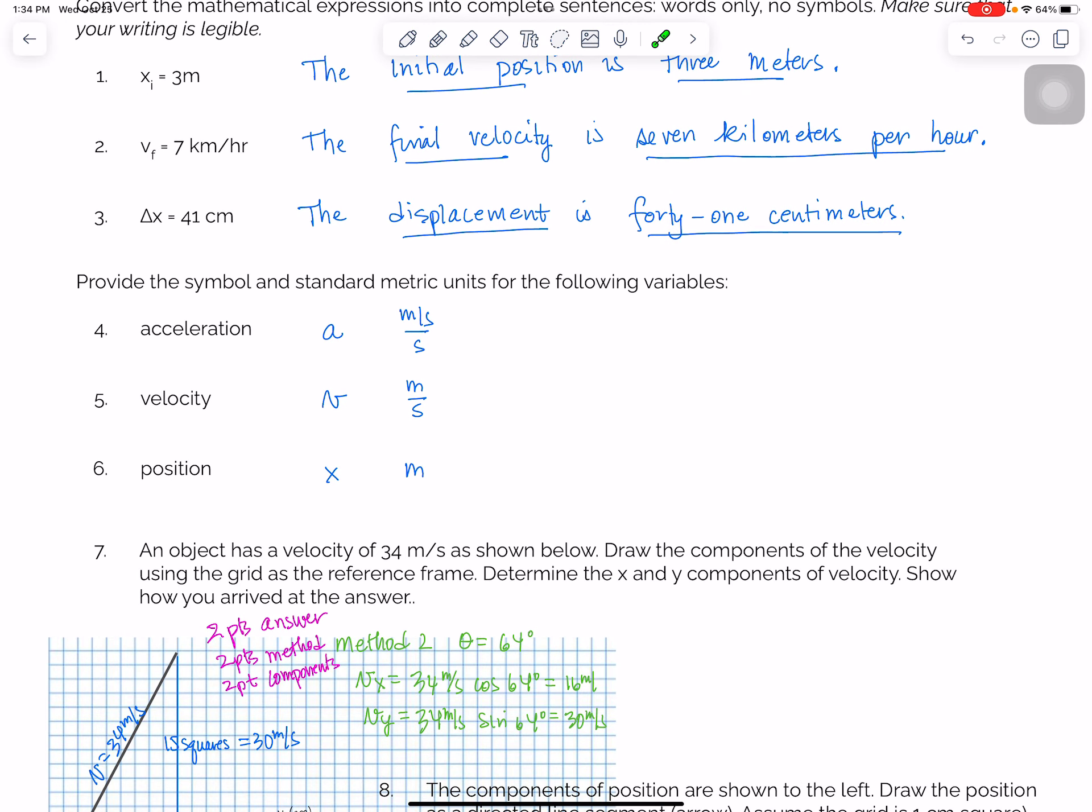Next, you had to do symbols and standard units. So acceleration, the symbol is A. The units are meters per second. I also accepted meters per second squared. Velocity is V, symbol for that is meters per second. And then position is X. People also had Y for Y position, which would be totally acceptable as well. And then standard unit is meters.